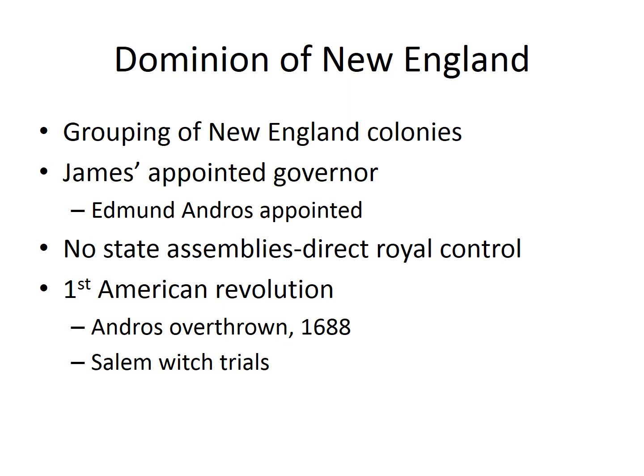The most obvious attempt to gain control over the colonies — at least partially drawn from the rise in smuggling and objection to the Navigation Acts — will be the establishment of the Dominion of New England. It will be a grouping of the New England colonies together: the Massachusetts Bay Colony, the Plymouth Colony, Connecticut, Rhode Island, and New Hampshire will all cease to exist under this. James will organize them as the Dominion of New England, assigning Edmund Andros as the governor.